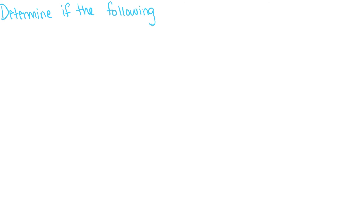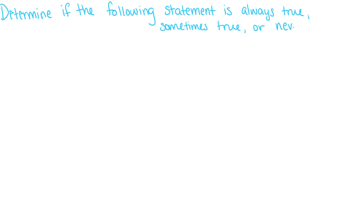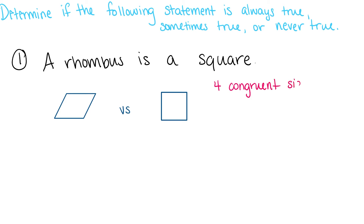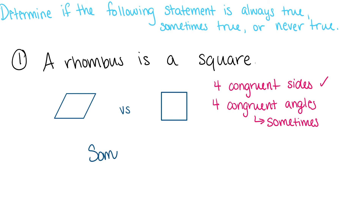Next, let's determine if the following statements are always true, sometimes true, or never true. Based on the features of our polygons, we can determine how true these statements are. First: a rhombus is a square. Well, both rhombuses and squares have four congruent sides, and squares have four congruent angles, which rhombuses can sometimes have. Therefore, this statement is sometimes true.